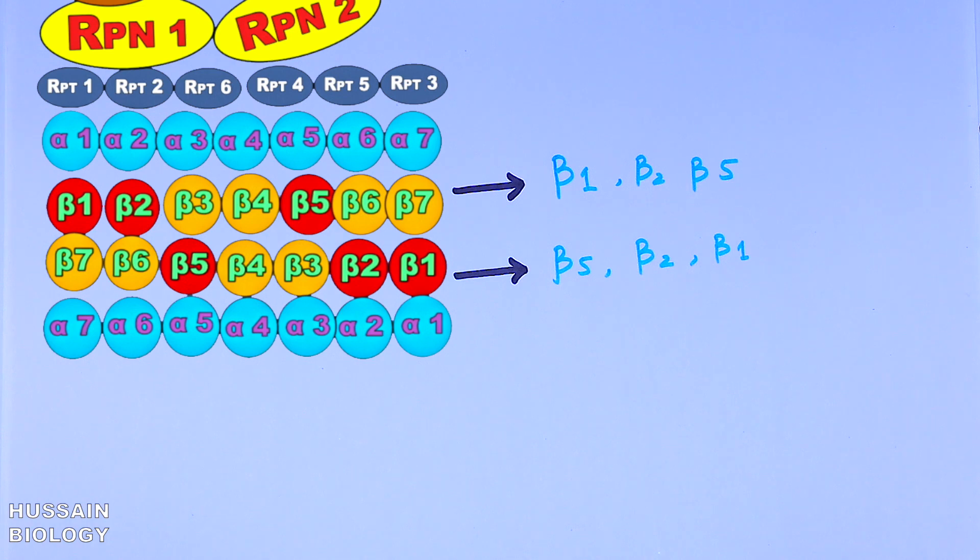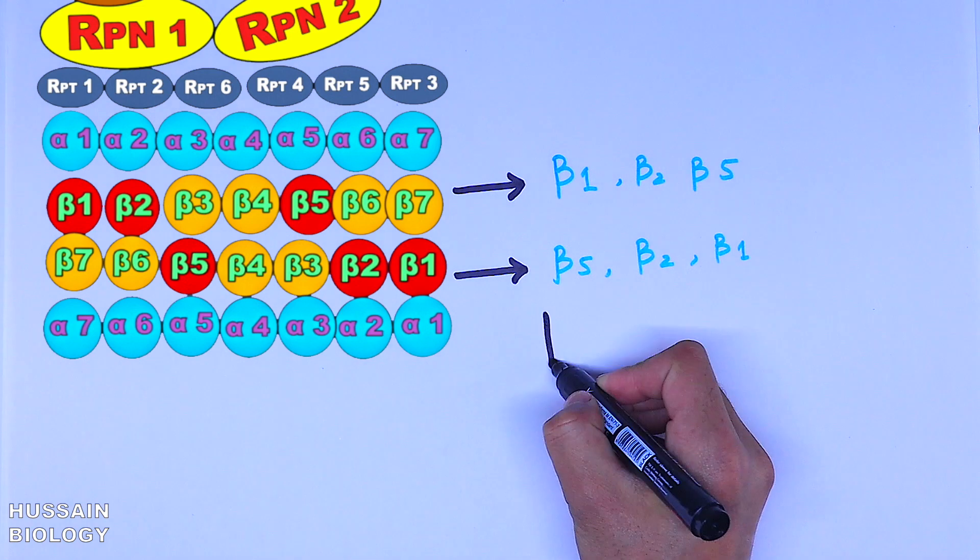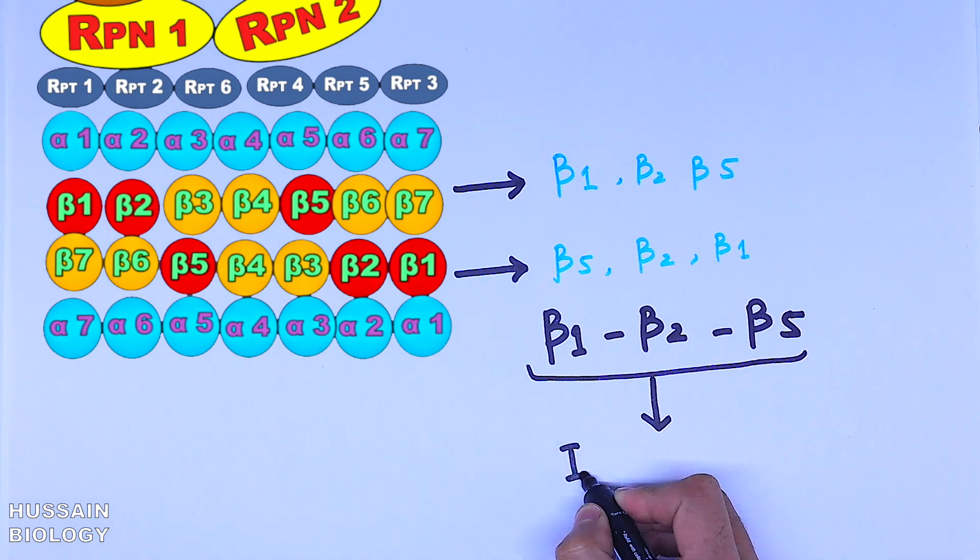So in a nutshell, we can say there are only three residues that are catalytic residues which are substituted by their isoforms in immunoproteosome and thymoproteosome.